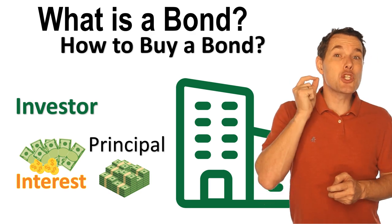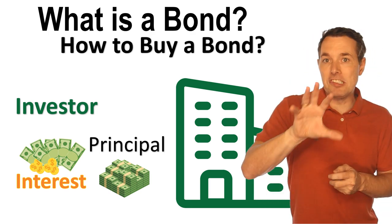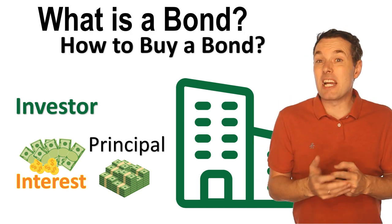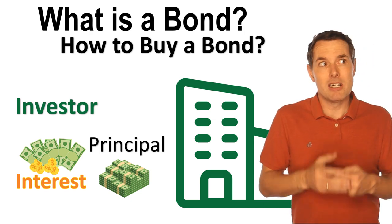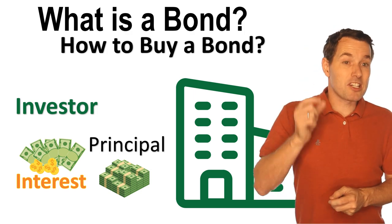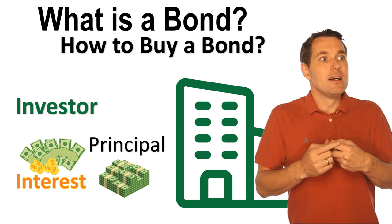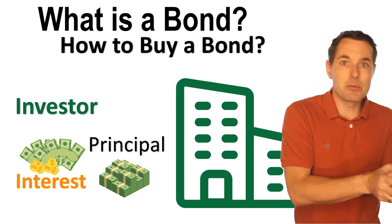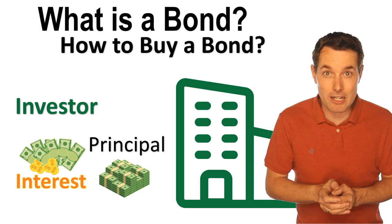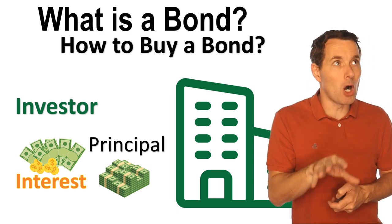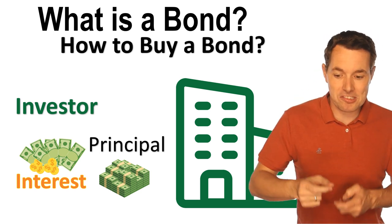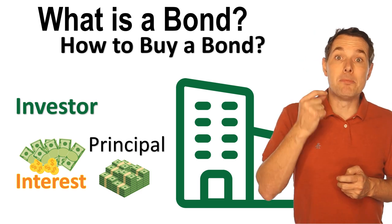The advantage to owning a bond versus a stock is that with a stock, you don't really know what you're going to get. A stock might pay a dividend, but the company generally has the right to change the dividend amount, pause it, increase it, whatever they want. With a bond, it's a contractual agreement — we lend the company, say, $1,000, and in return they pay us 5% a year, or $50 a year. If it's a semi-annual payment, which most bonds are, that's $25 every six months. The advantage is the certainty and stability of it.